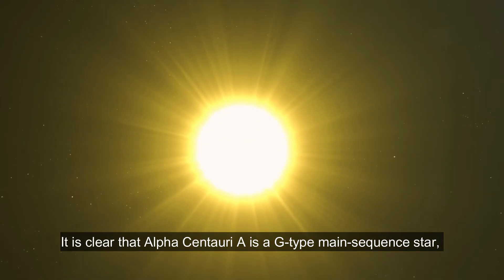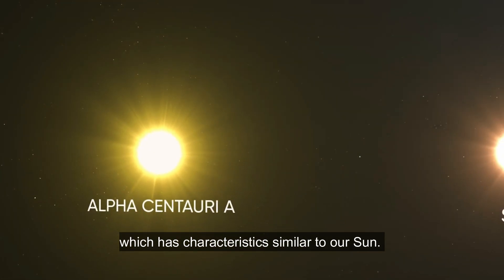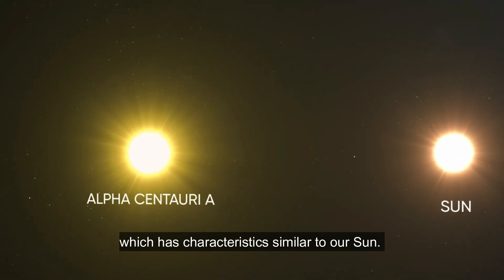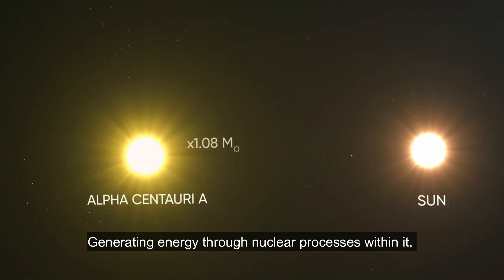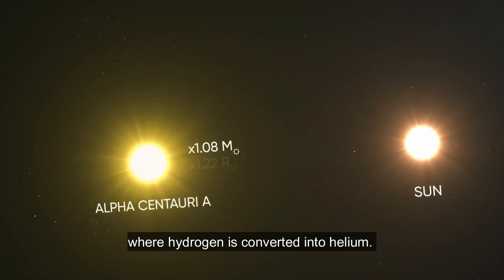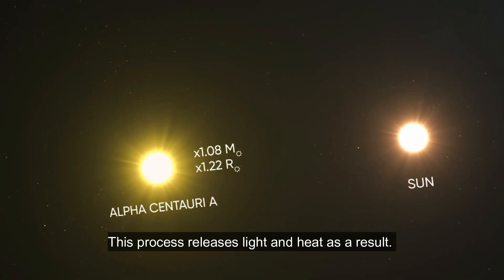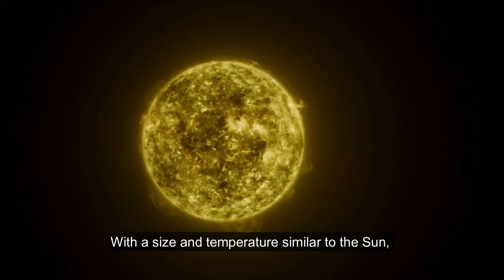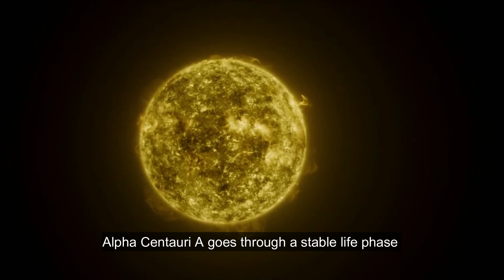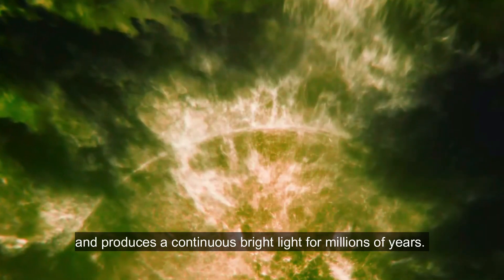It is clear that Alpha Centauri A is a G-type main-sequence star, which has characteristics similar to our Sun, generating energy through nuclear processes within it, where hydrogen is converted into helium. This process releases light and heat as a result. With a size and temperature similar to the Sun, Alpha Centauri A goes through a stable life phase and produces a continuous bright light for millions of years.